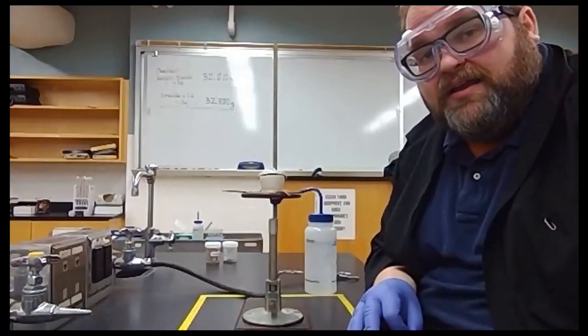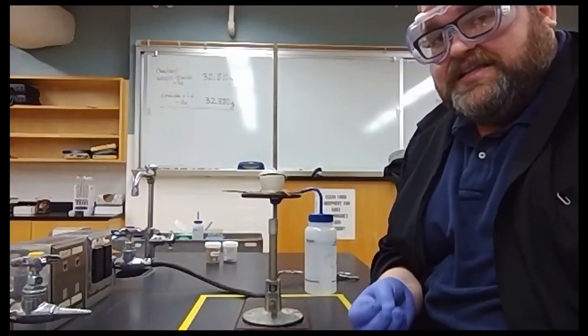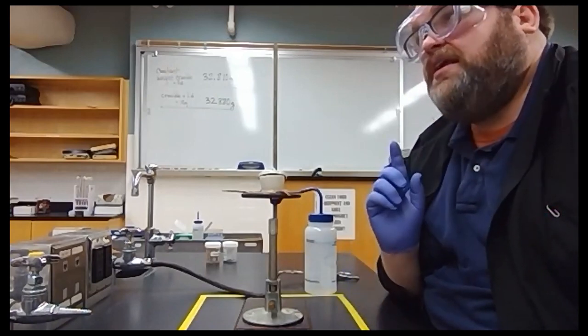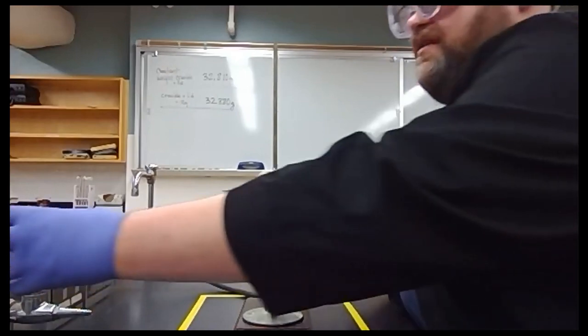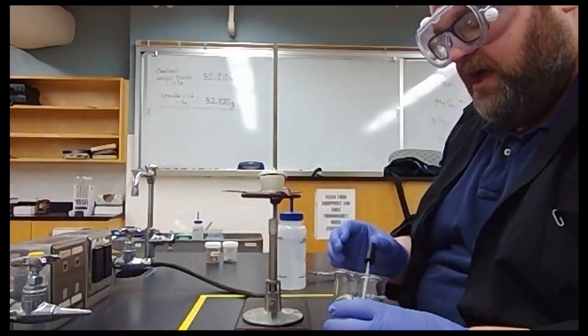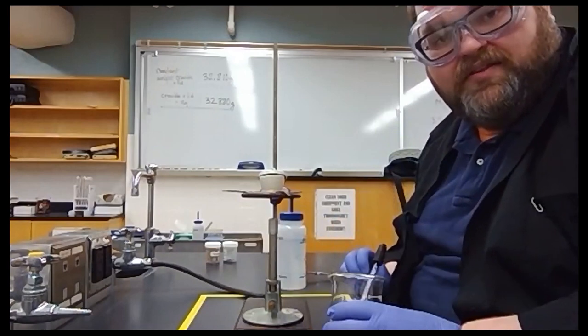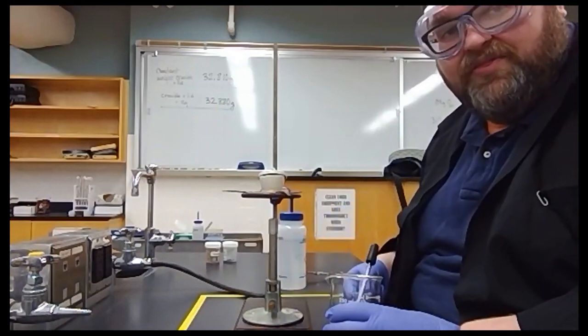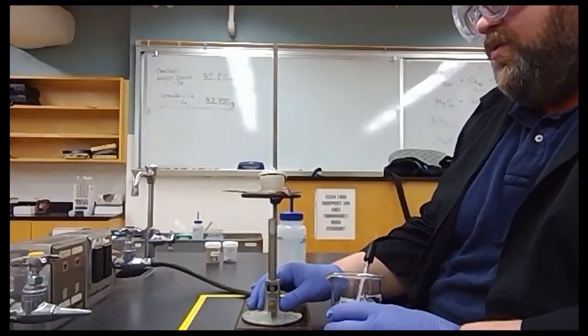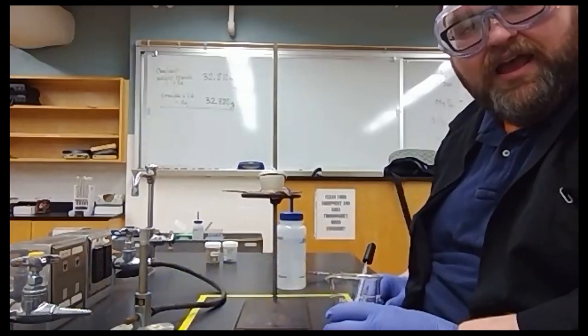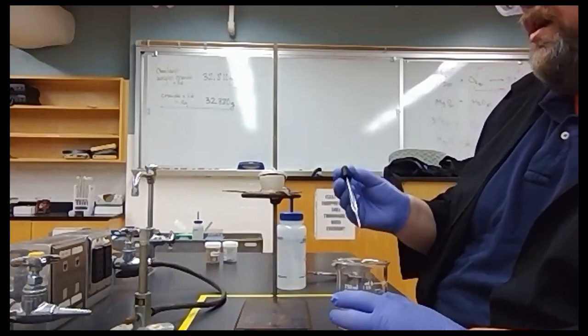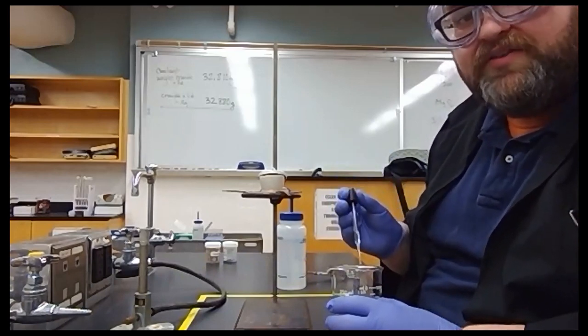We're going to add some deionized water to it. The deionized water is going to convert the magnesium nitride to magnesium hydroxide. Then we're going to put it back on the heat and we're going to convert the magnesium hydroxide to magnesium oxide. First, I don't want this to flash or anything so I'm going to move the gas out from under that. I'm going to give this a second to cool down a little bit.